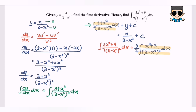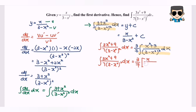So integrating, we get 3/7 times the integral of (x² + 3) / (3 - x²)² dx = 3/7 · x / (3 - x²) + c. That's our final answer. Thanks for watching.